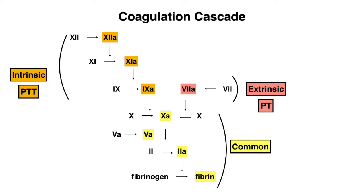We also have factor 7, which is part of the extrinsic pathway, and this is often measured by the PTT value. Factor 10 is the beginning of our common pathway, which is where the intrinsic and extrinsic pathways meet. This pathway consists of factors 10, 5, and 2 — you can remember this as 10 divided by 5 will give you 2 — and then we get our final product, which is fibrin.